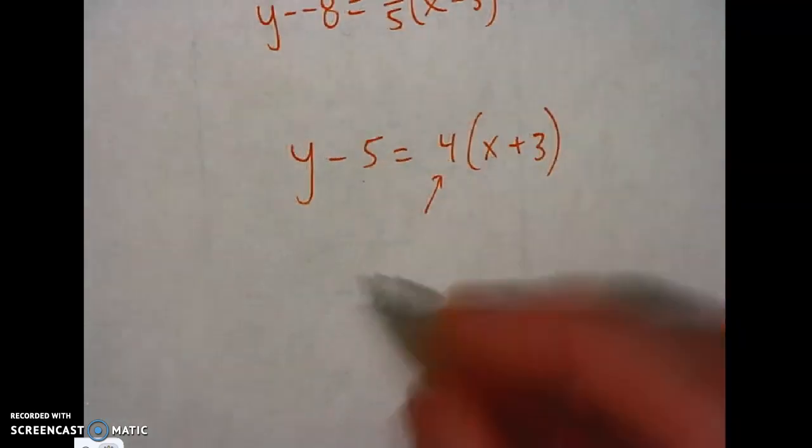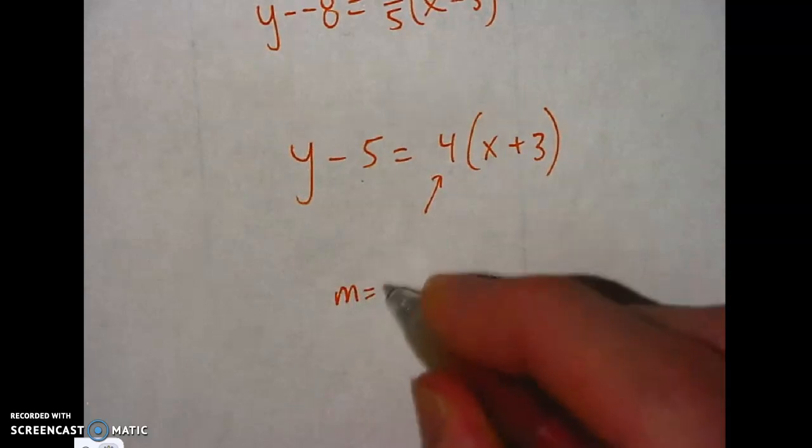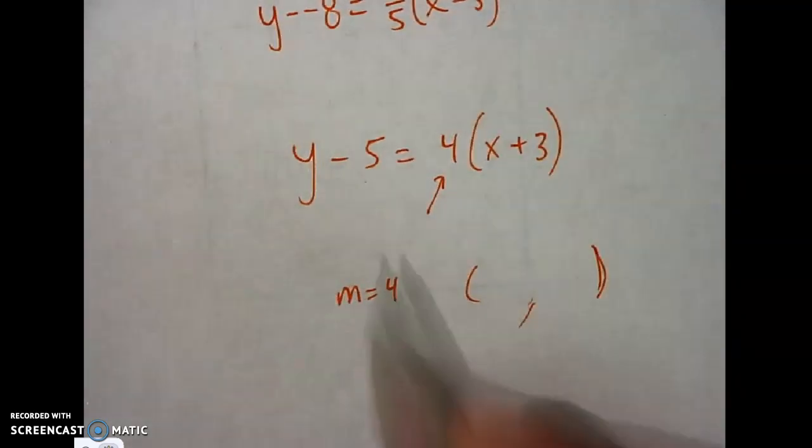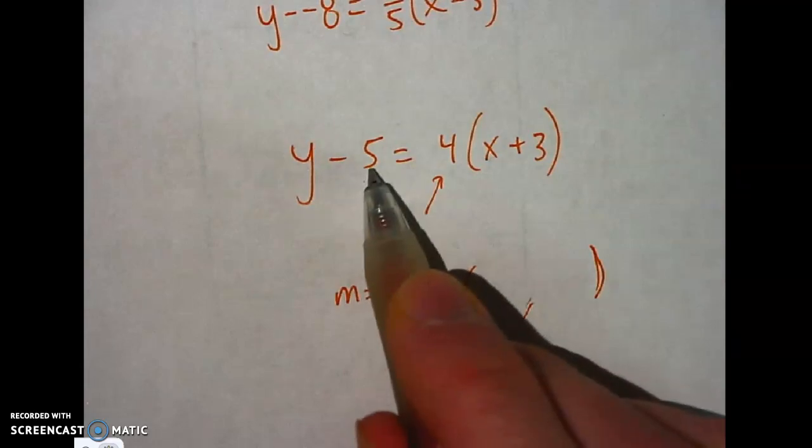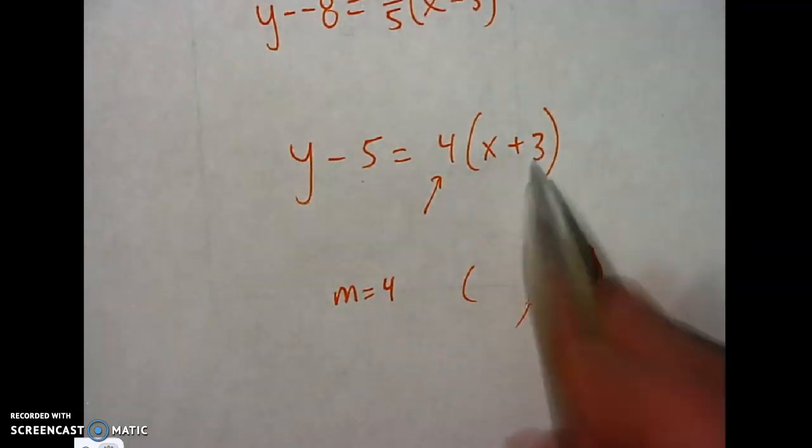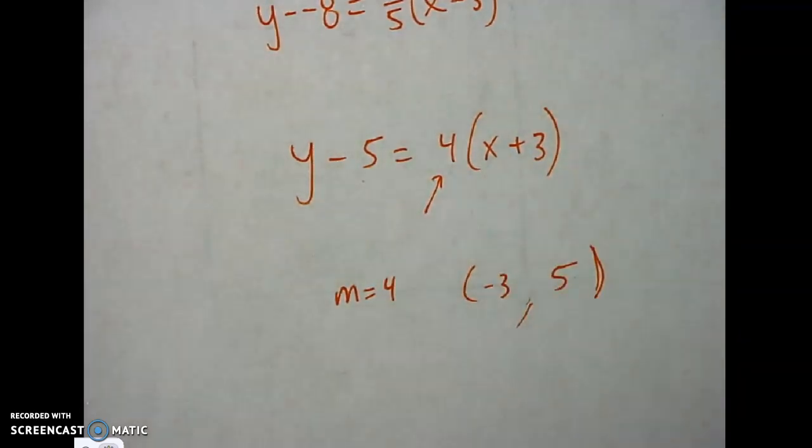You'll need to know, hey, the slope's right there. It's 4. And you can get your coordinate point from the y value right here. But it's going to be the opposite of that. Positive that. And the opposite of this. My x is negative that. That is the slope and the point from this equation.